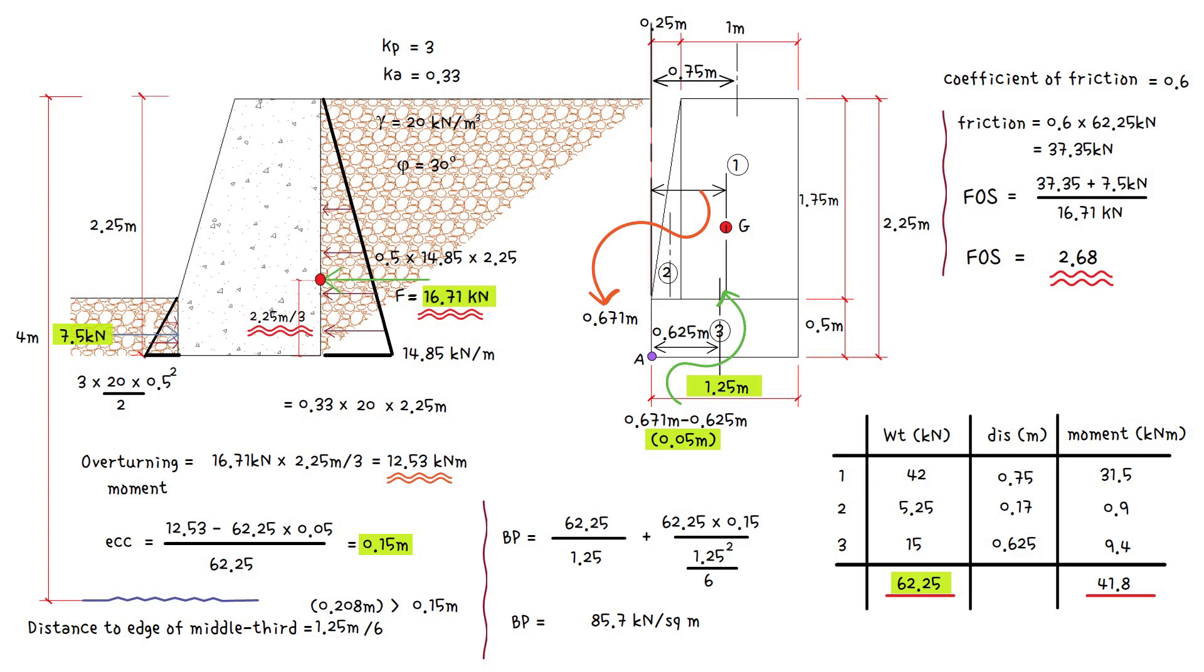So in today's video, we will use the same previous example. However, we will explain how to work out the maximum bearing pressure if the drainage behind the wall becomes blocked and water rises to the top of the wall.